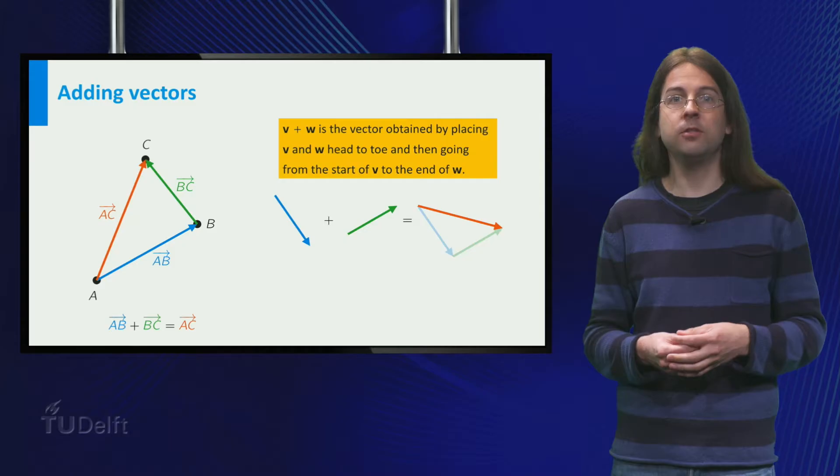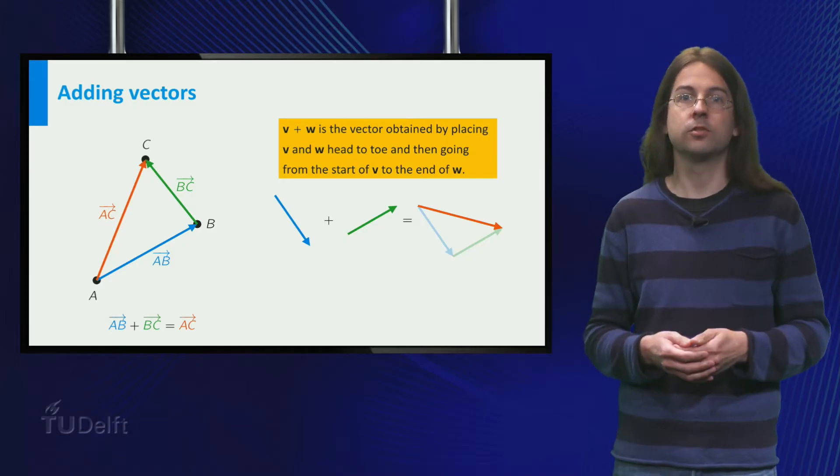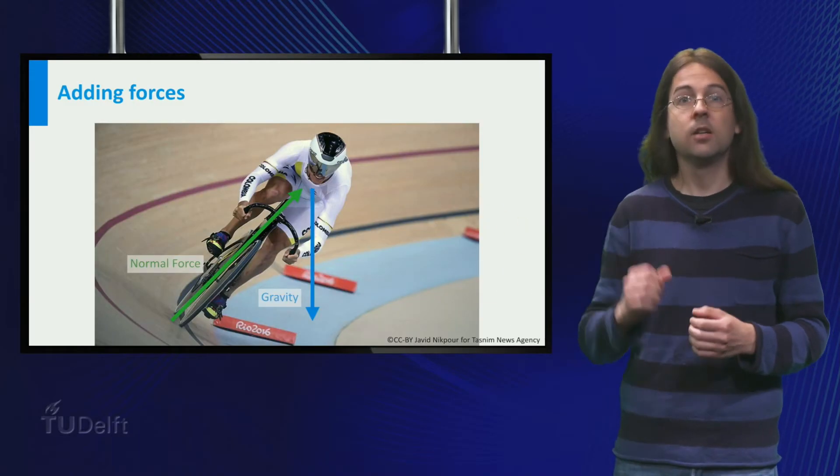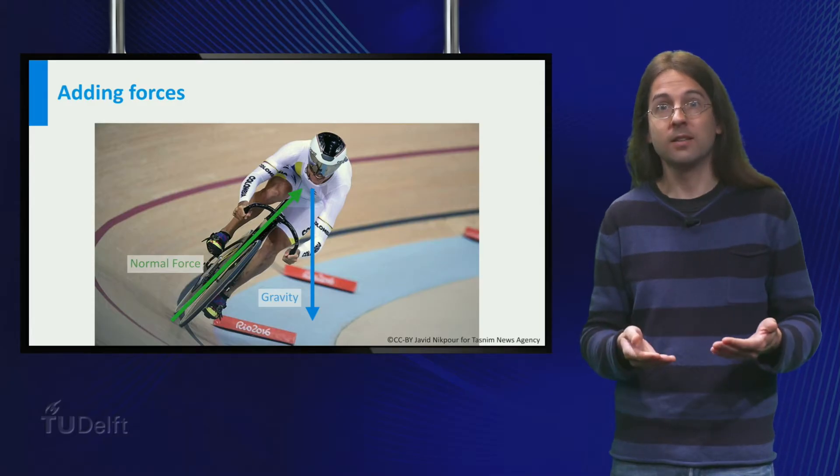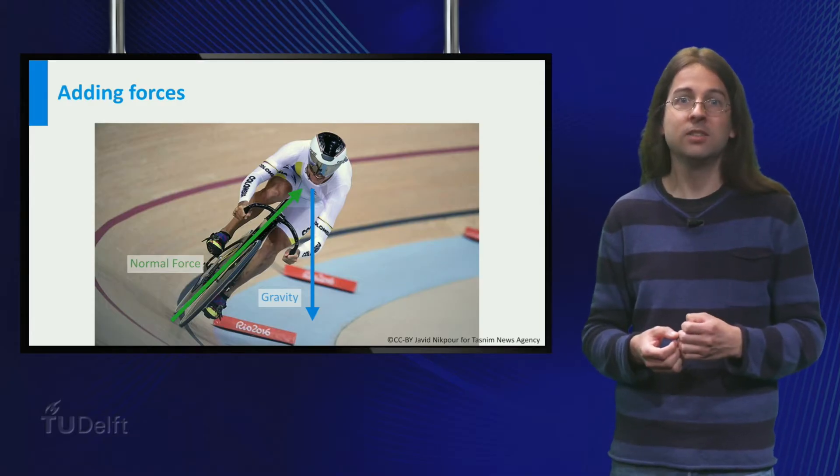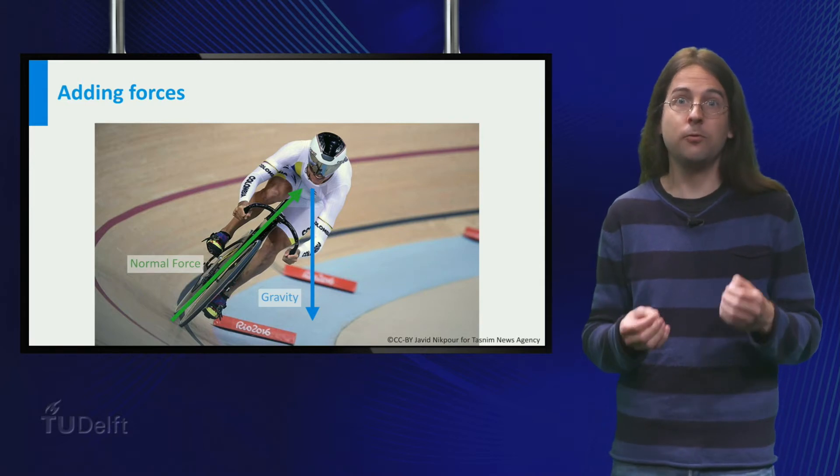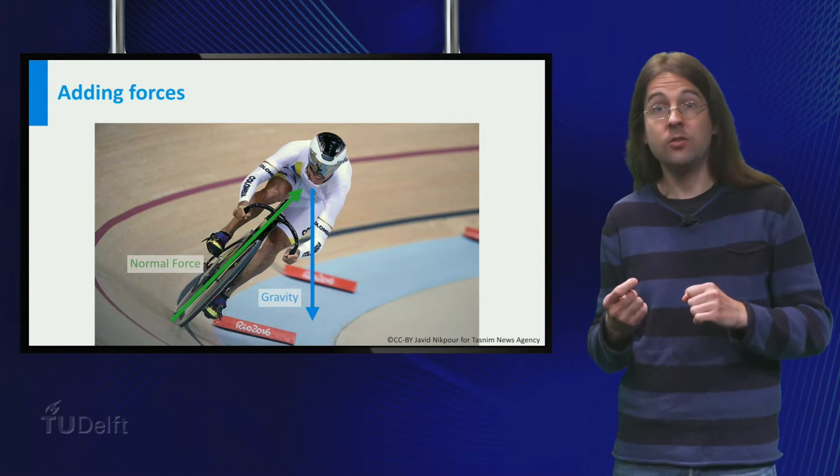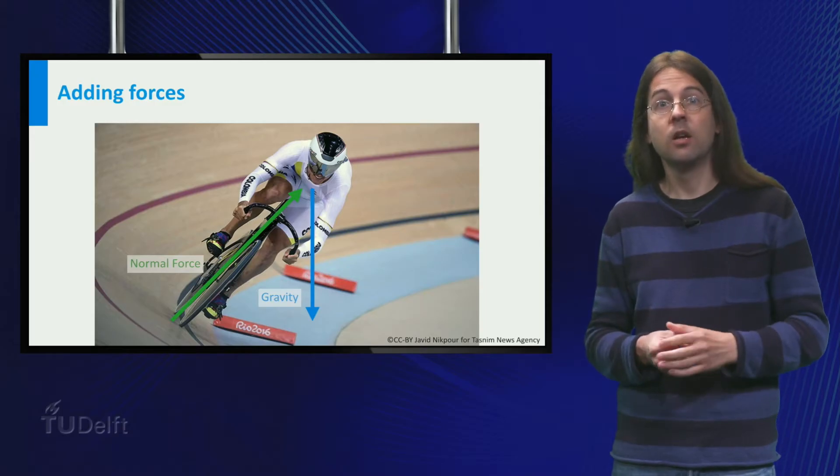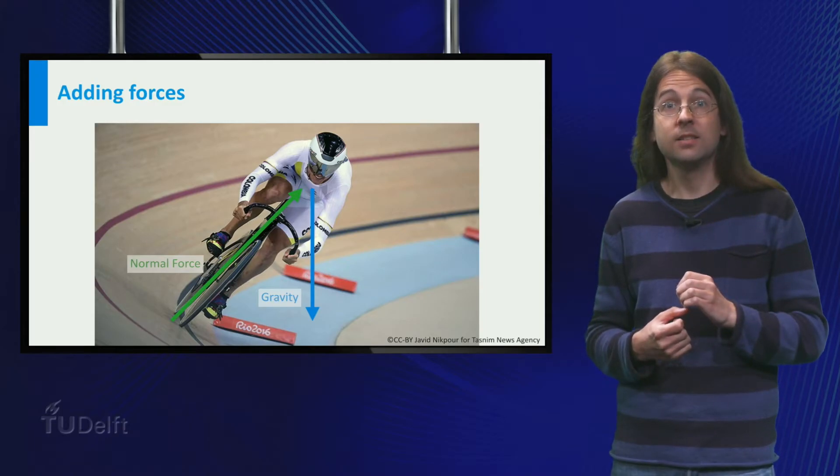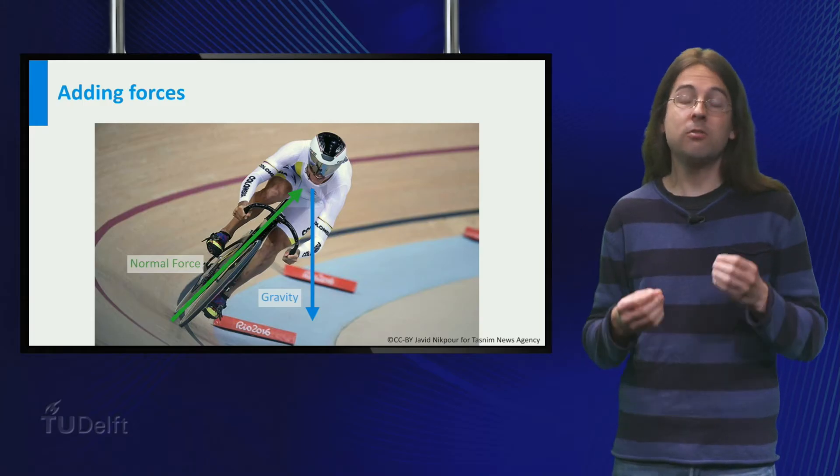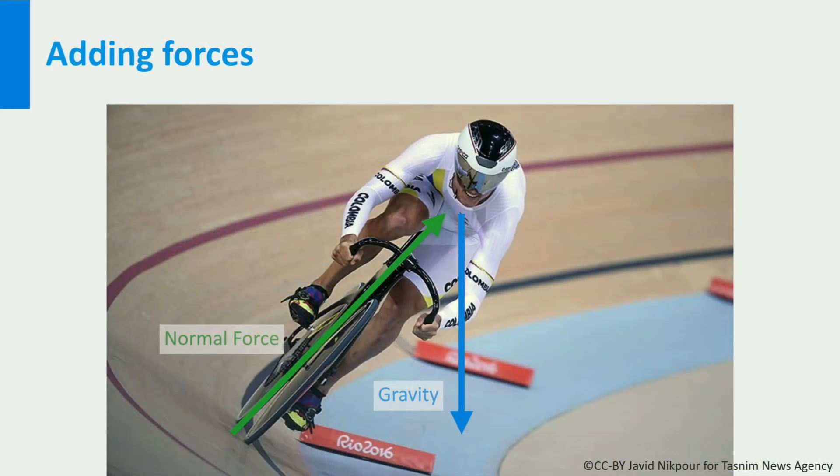A typical application of this vector addition is adding forces. Consider this cyclist on this heavily sloped track. Gravity is pulling him downward, while the track exerts a force perpendicular to the track, that is to the top right. What is the total force on the cyclist? Well we need to add these two vectors. The sum of the two forces is obtained by placing the vectors head to toe. Together they generate the orange force to the right, which helps the cyclist to easily round the corner.